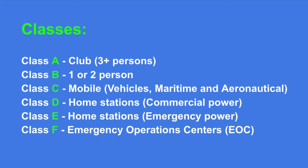We have a few types of classes. Class A is for a club that has at least three people or more. Class B is for one or two persons. Class C is for mobile stations — it can be a vehicle, boat, or even a plane. Class D is a home station using commercial power. Class E is for a home station under emergency power. Class F is for operations from emergency operating centers.